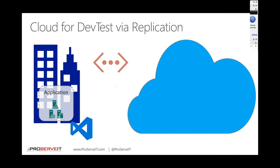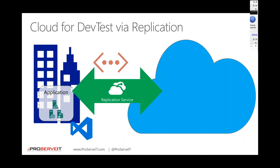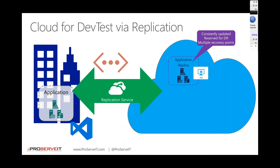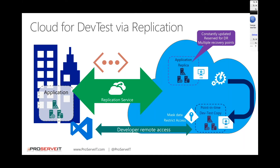Another scenario we come across quite frequently is dev/test. This is for environments that have either an application running internally or some IP they've built that runs both a production and a dev/test environment. From a dev/test perspective, we're able to take your test environment on-premise, enact the replication, and create a replica of that environment in an isolated fashion so it doesn't touch or connect to the production environment. Because we've done this replication, it's an exact replica, so developers can test with confidence knowing whatever they're testing is exactly what they'd see in production.